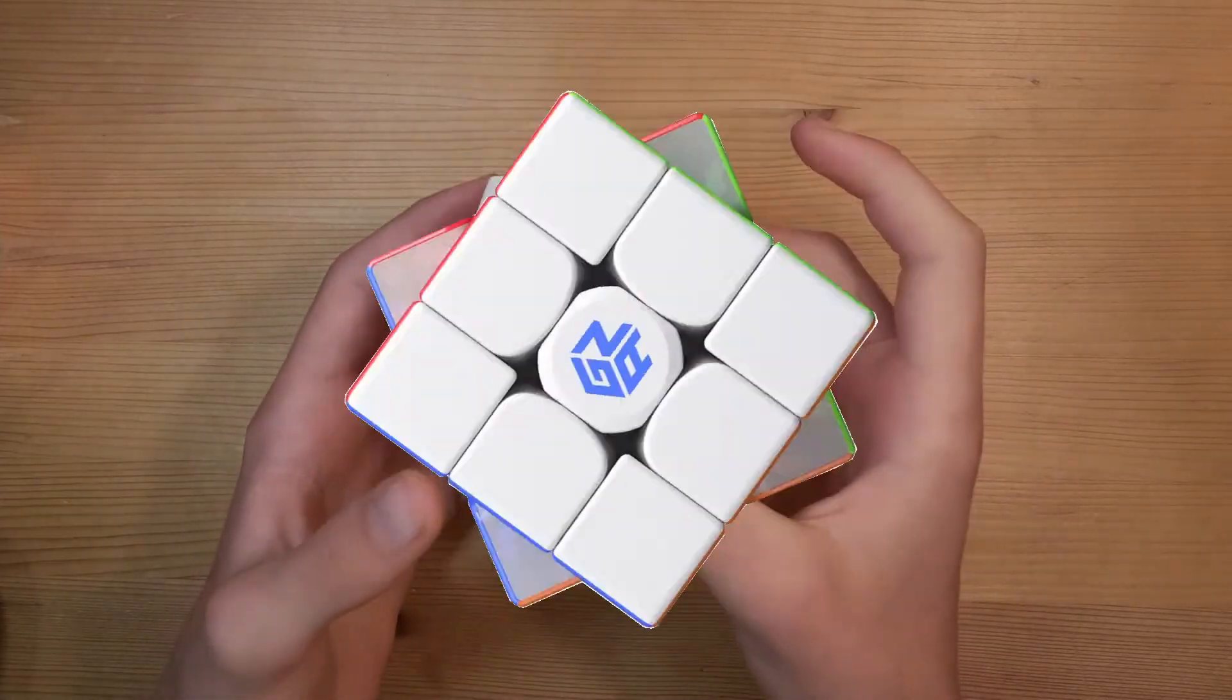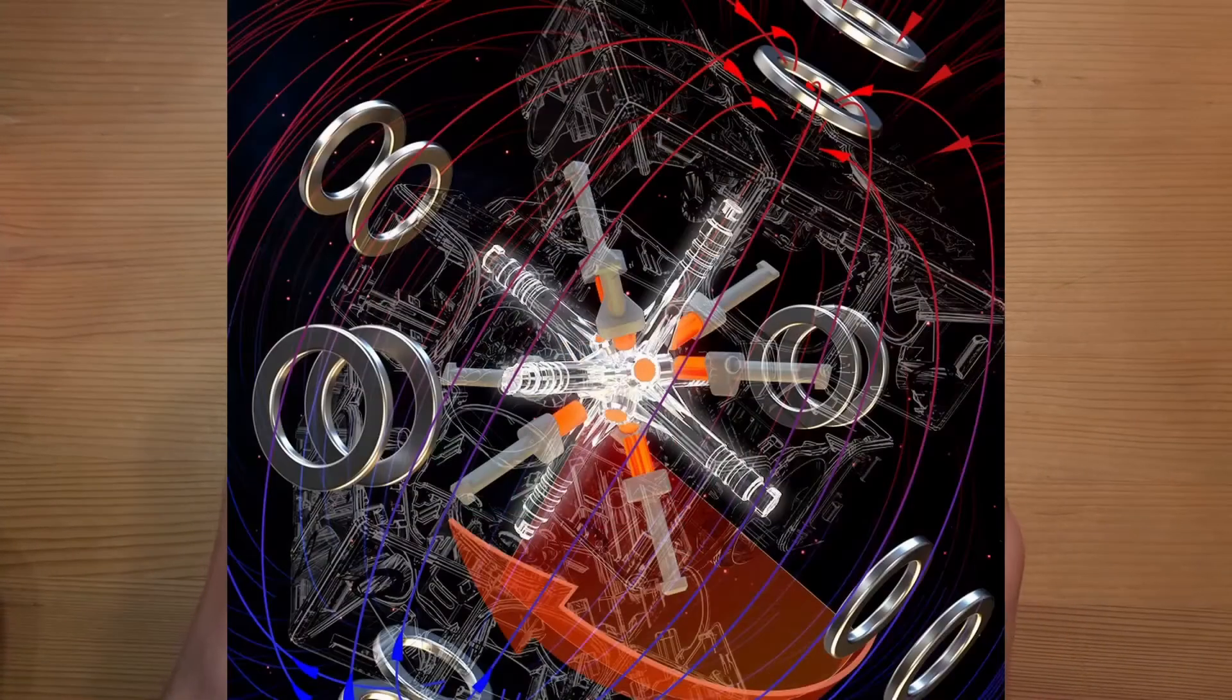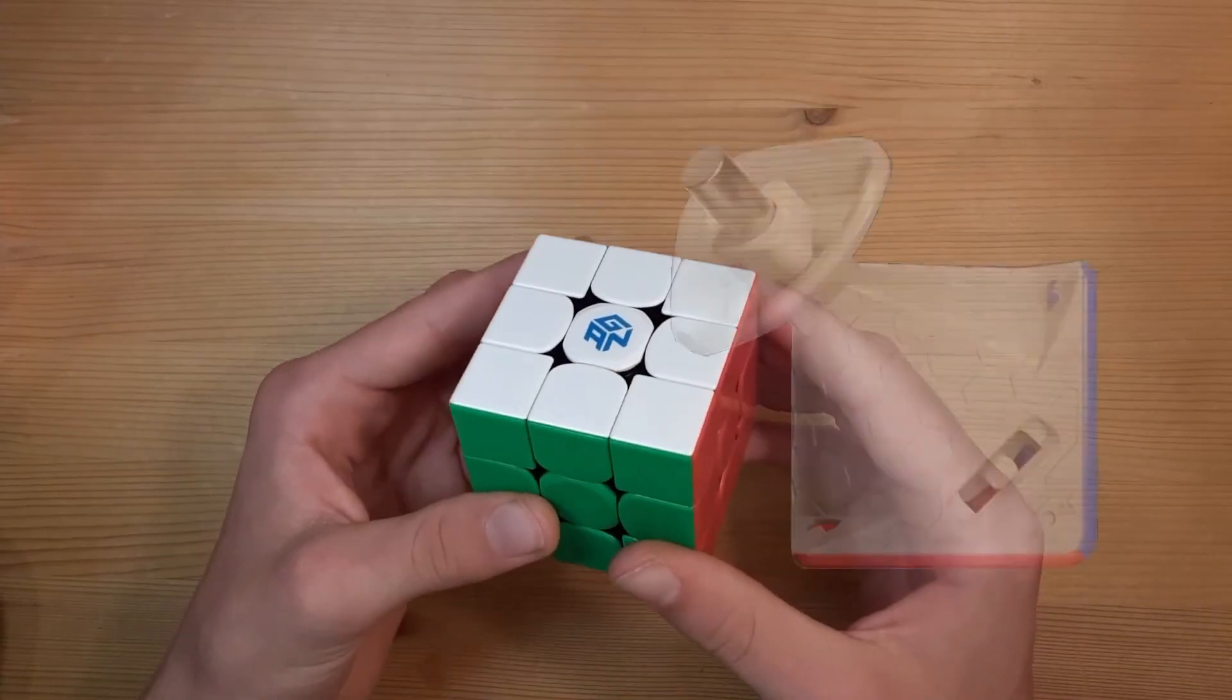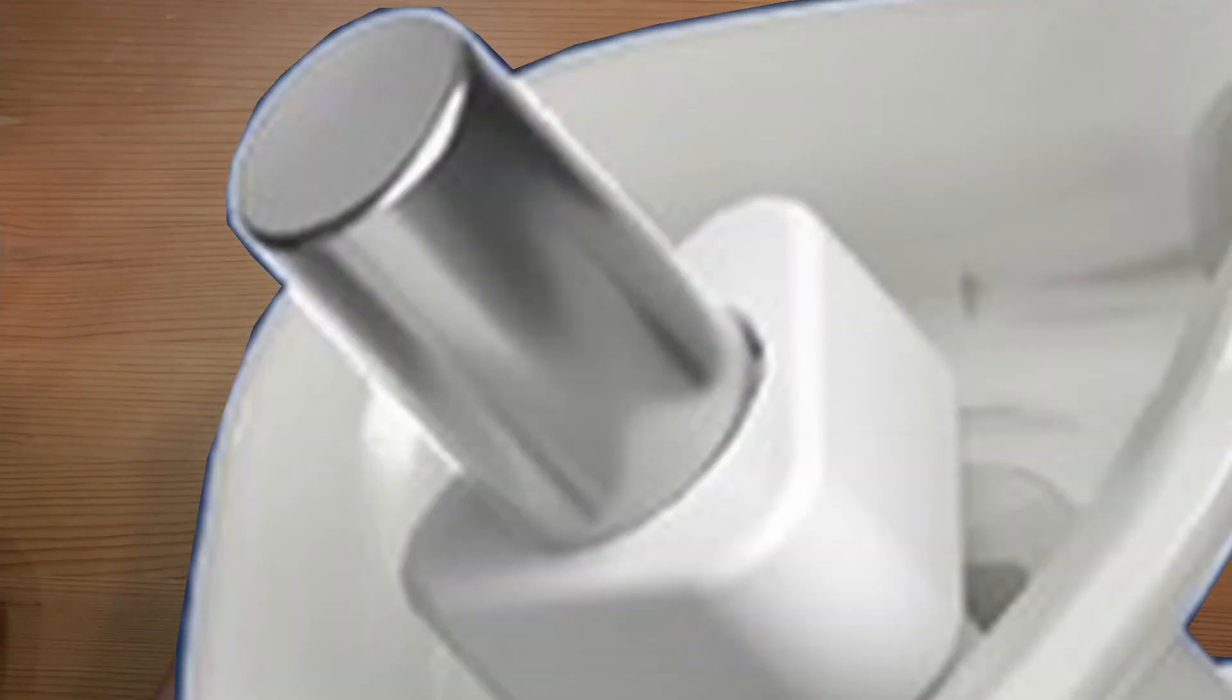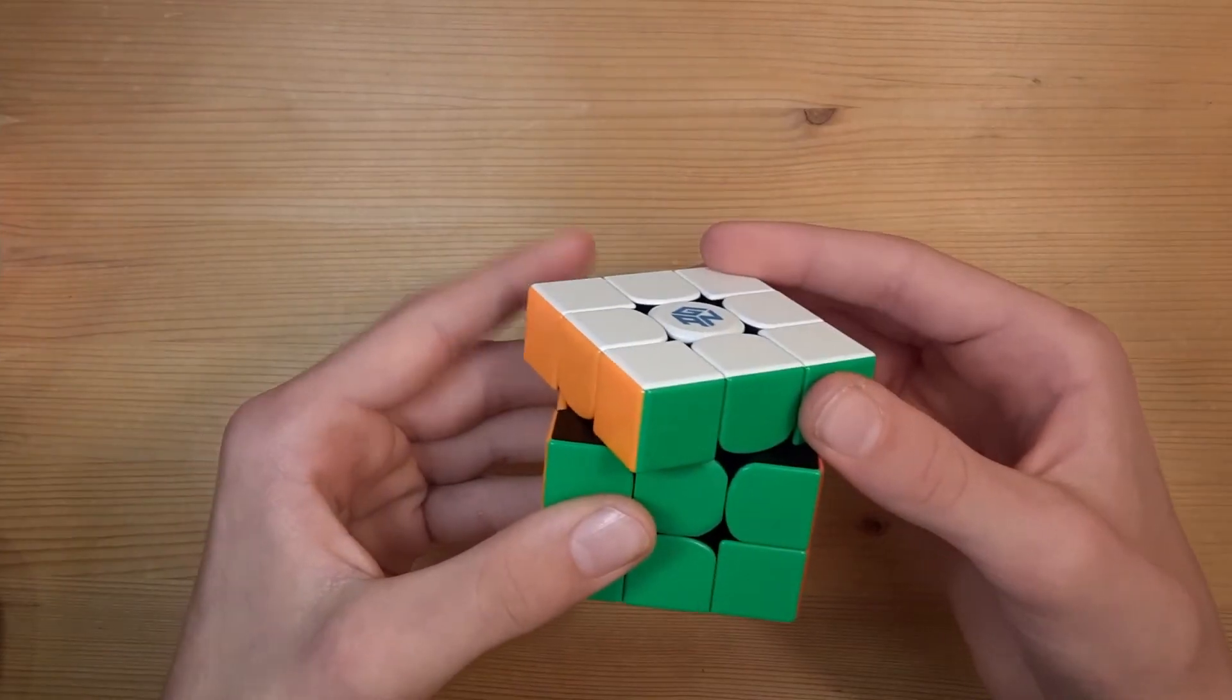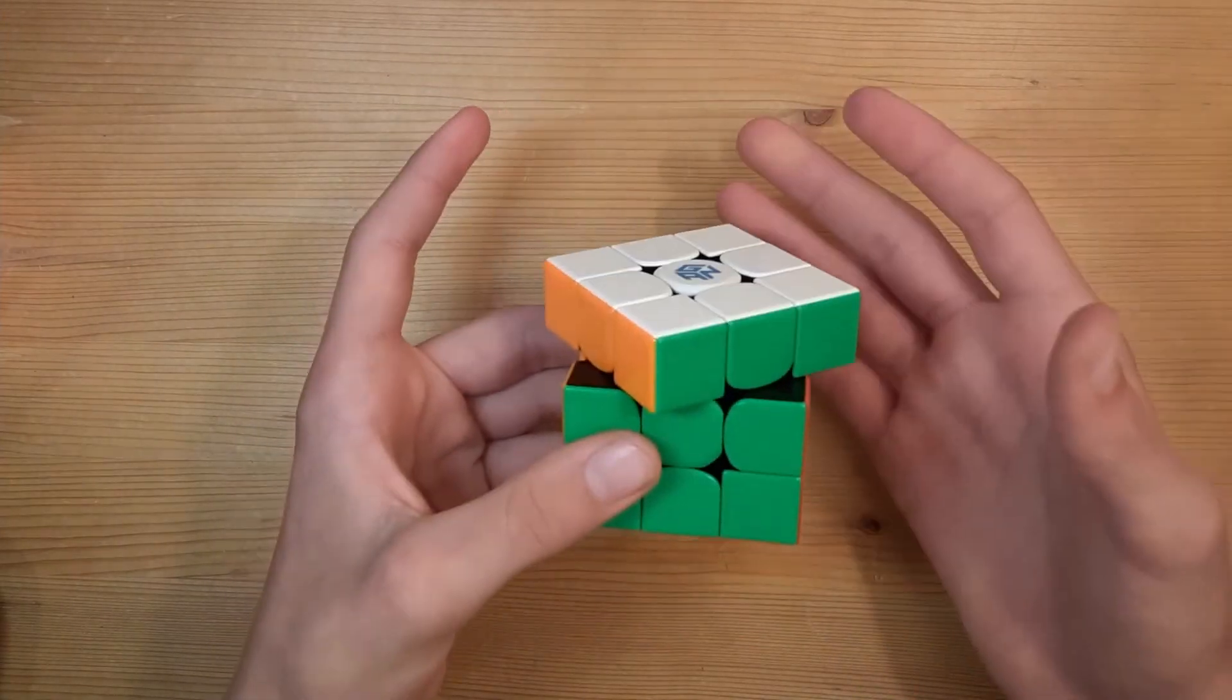Now with the GAN 12 Maglev, not only does it have the really cool Maglev feature, but it also has really long corner to core magnets on the corners, so it starts pulling the layer to be aligned when it's even further out.